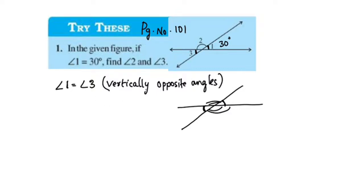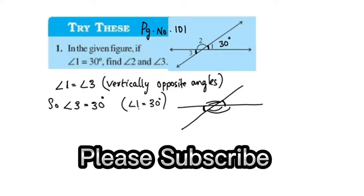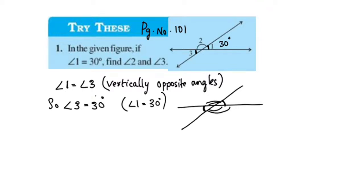Angle 1 is 30 degrees. Angle 3 is equal to 30 degrees. Angle 1 is equal to 30 degrees. This is the vertical angle.